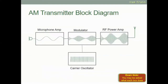This is an AM transmitter block diagram. It shows the audio wave and the carrier signal being generated. The modulator produces the AM wave, and then the RF power amplifier increases the power — you can see the output pattern is much bigger than the input pattern because more power is being generated — and that stage sends it out through the antenna.